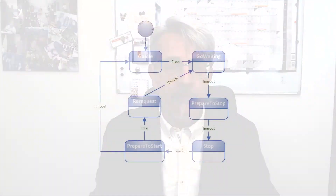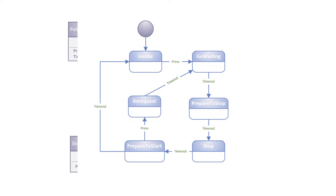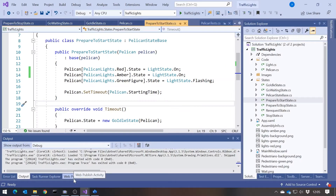Just as a quick recap, if we look at the diagram here, we can see that was our State diagram, which didn't depend on the State pattern. We saw we had the six states that the Pelican went through. And then in the Class diagram, we saw that the State pattern means we represent each state as an individual class. And then that was coded up, looking something like this.